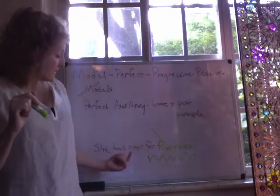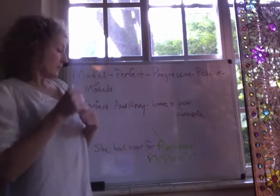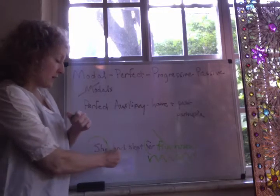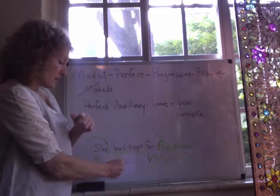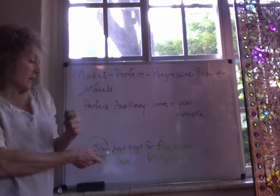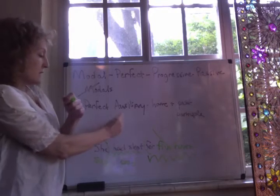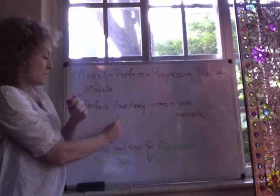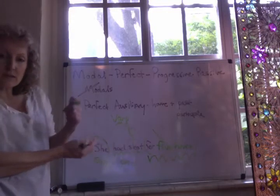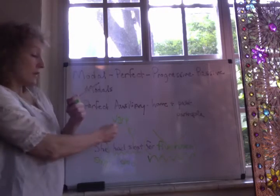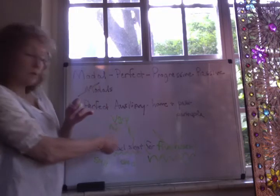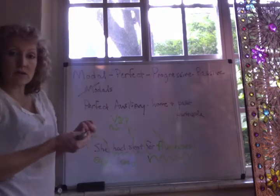Then we have the sentence 'she had slept.' We know the subject is 'she' and the predicate is 'had slept.' Therefore, we know that the verb group is comprised of 'had' and 'slept.' As always, the main verb is on the rightmost side, so 'slept' is appearing where it should. On the left-hand side, we always have auxiliaries, and depending upon which verbs you have there, you're going to have auxiliaries of different types.